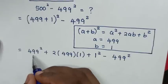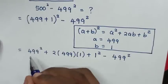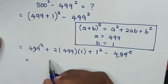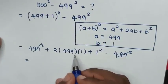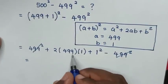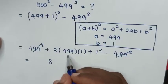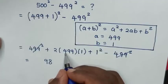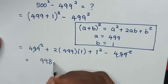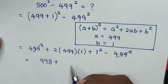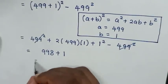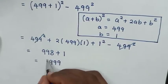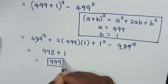Then this 499 square minus this is 0, so this and this will cancel each other. Then it will be equal to 2 times 499 times 1 — so 2 times 9 is 18, 2 times 9 is 18 plus 1 is 19, 2 times 4 is 8 plus 1 is 9 — then plus 1 square is 1. Then it will be equal to 998 plus 1 is 999. So this is our final answer.